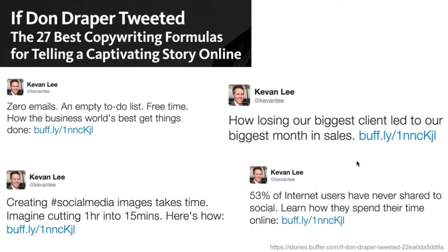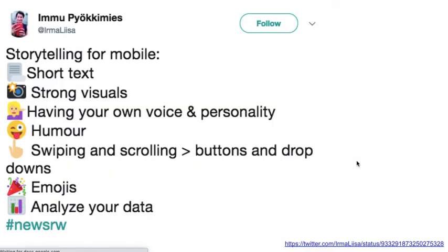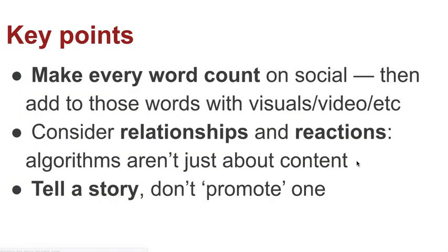If you want more ideas for narrative structures on Twitter and social media, the article 'If Don Draper Tweeted' is well worth reading — you can find the address in the slides on Moodle. Some final tips on storytelling for mobile: using emojis as bullet points can help, keep short text with strong visuals, having a personality really helps, humor obviously goes very far, and on some platforms consider the role of swiping and scrolling in your content. Analyze your analytics, the data about the performance of your content, and adjust based on what works.